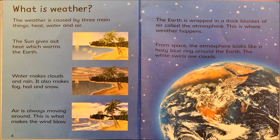So, what is weather? Well, based on what we read, weather happens in the atmosphere and is caused by three main things: heat, water, and air. Some examples of weather include rain, fog, hail, and snow.